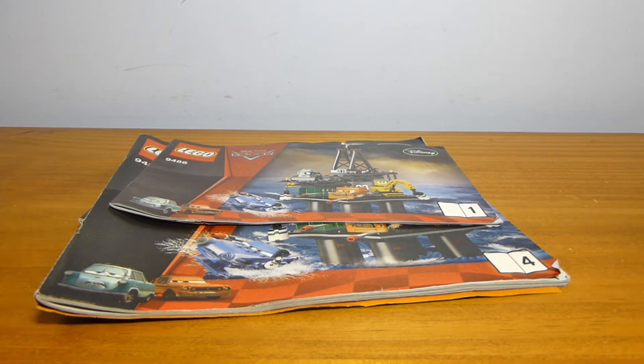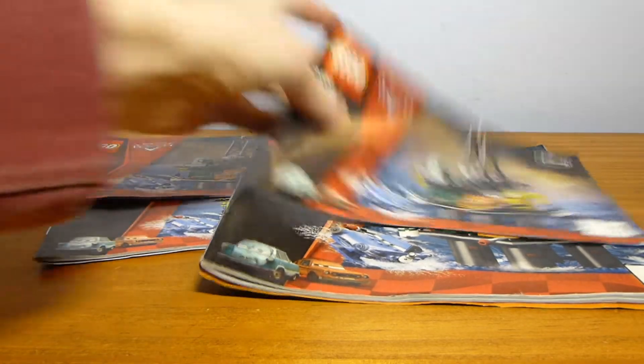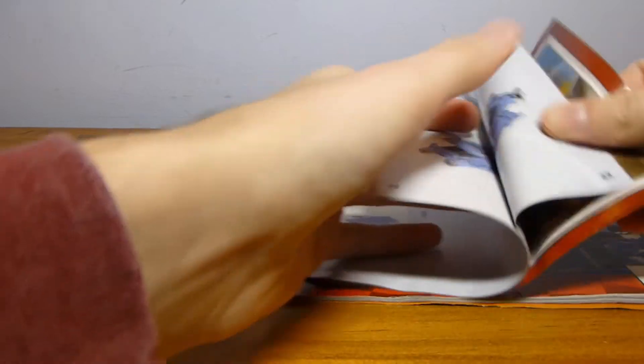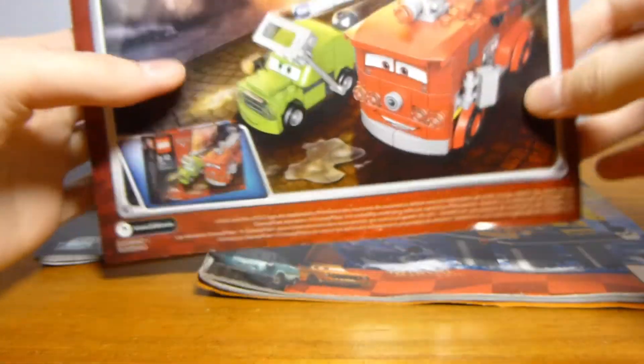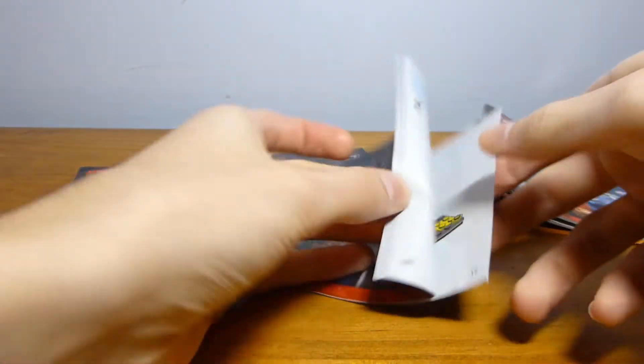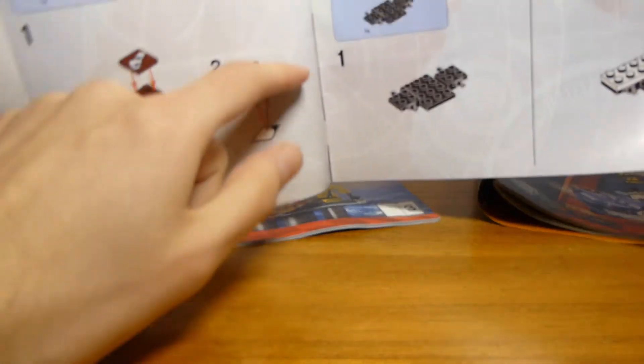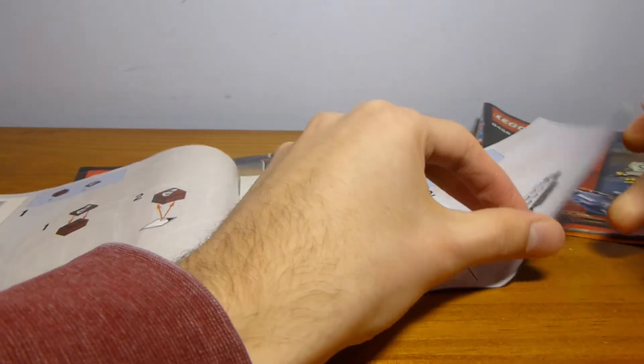Before we get into the actual models, I want to talk about the instruction booklets because there are four of them for a $50 set, which is a lot. The first instruction booklet is very thin and just contains instructions for building Professor Z and Finn McMissile, and has a single ad at the back.